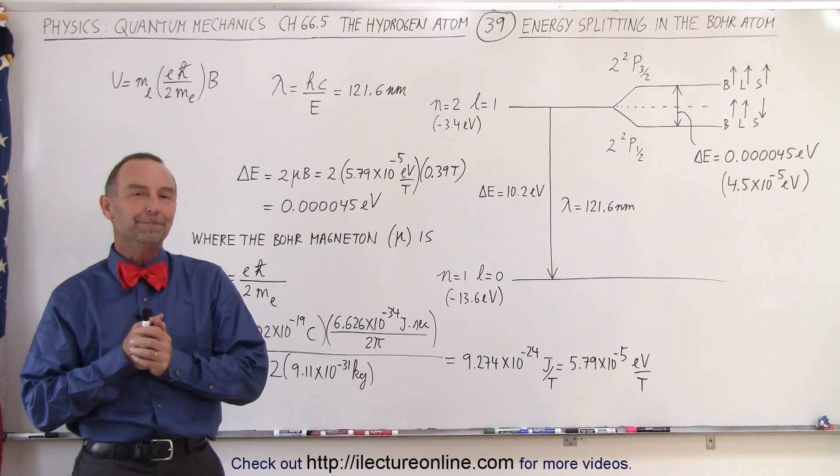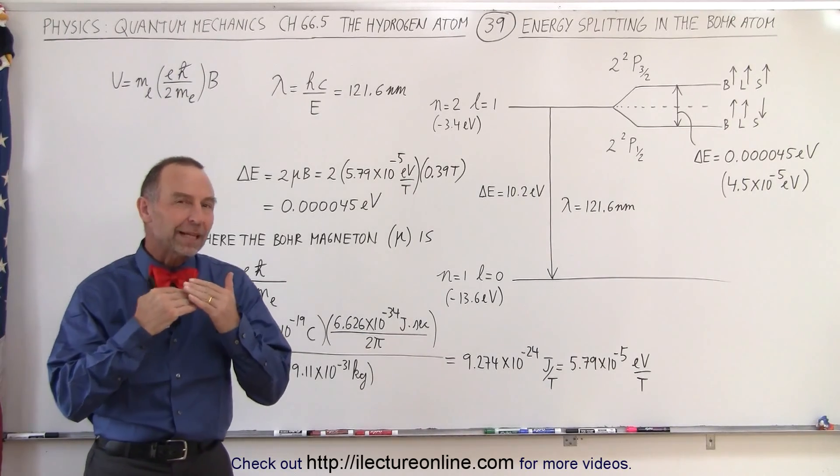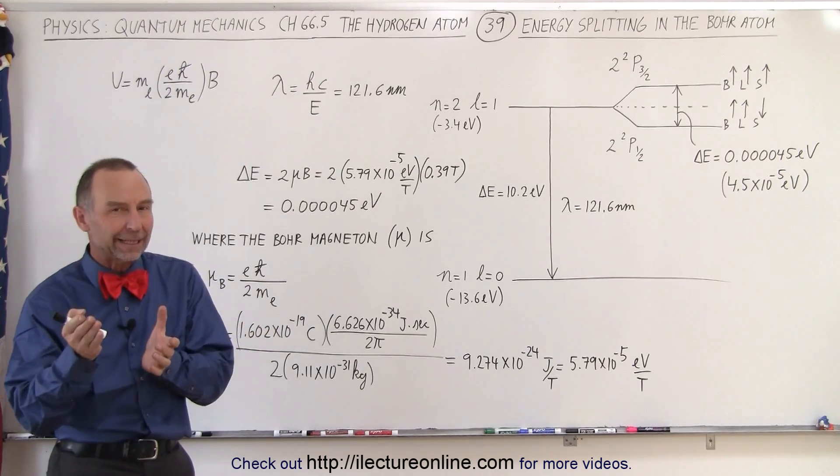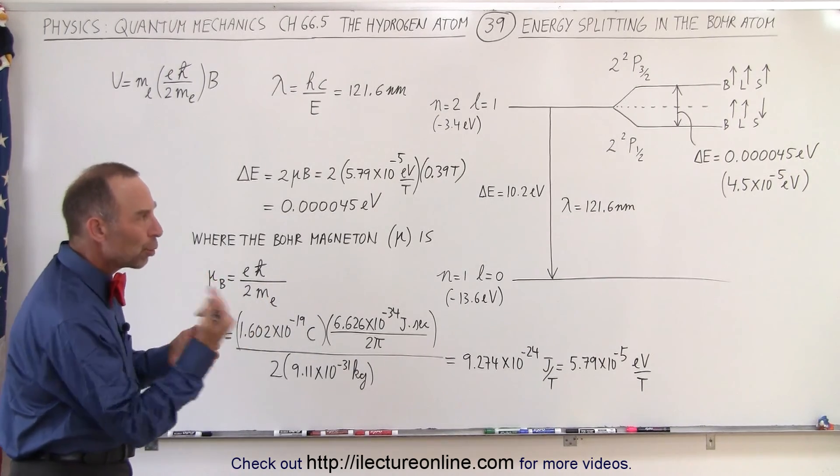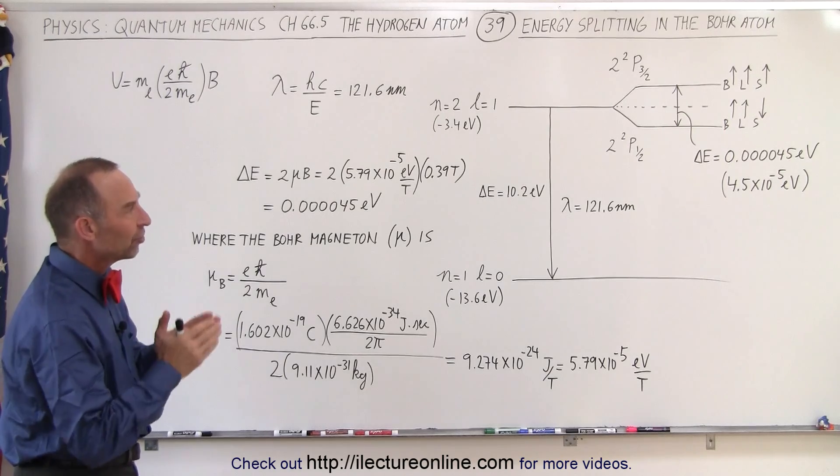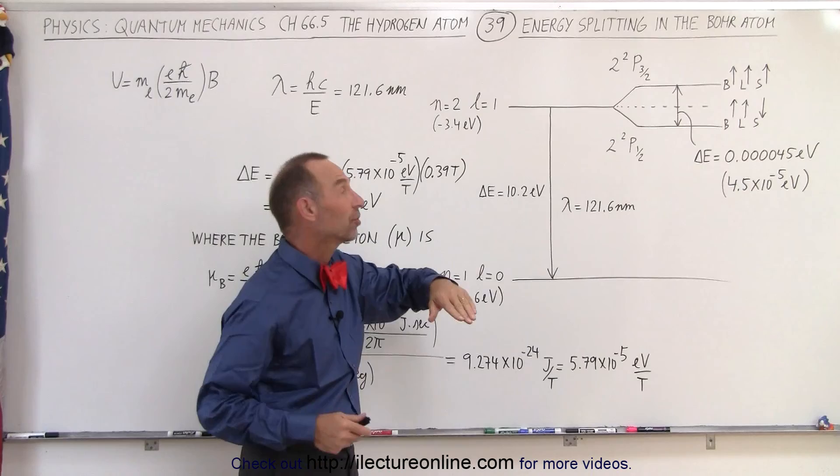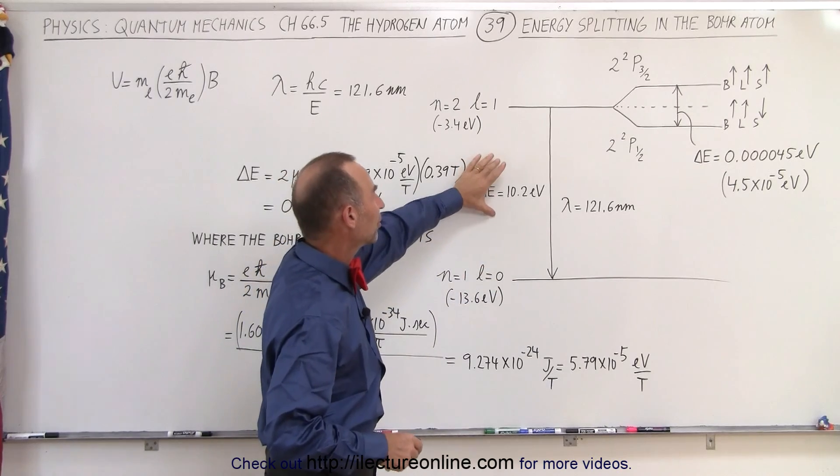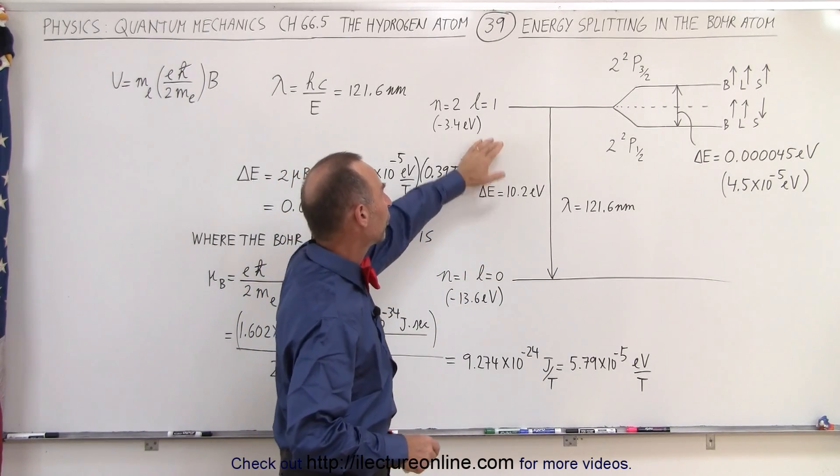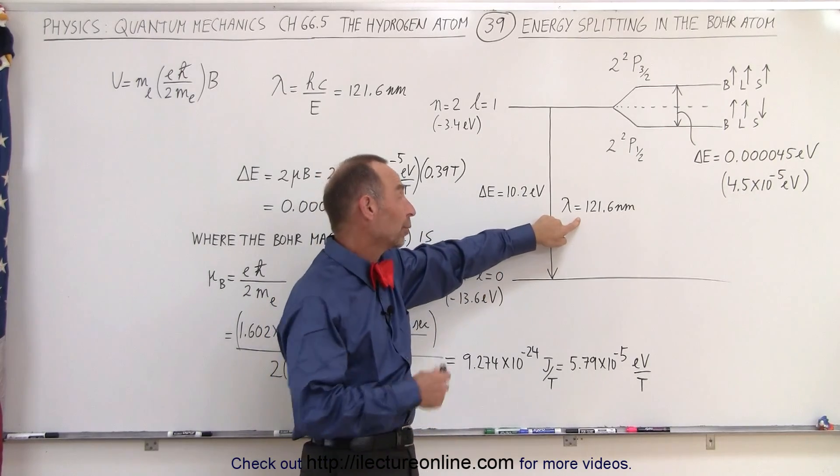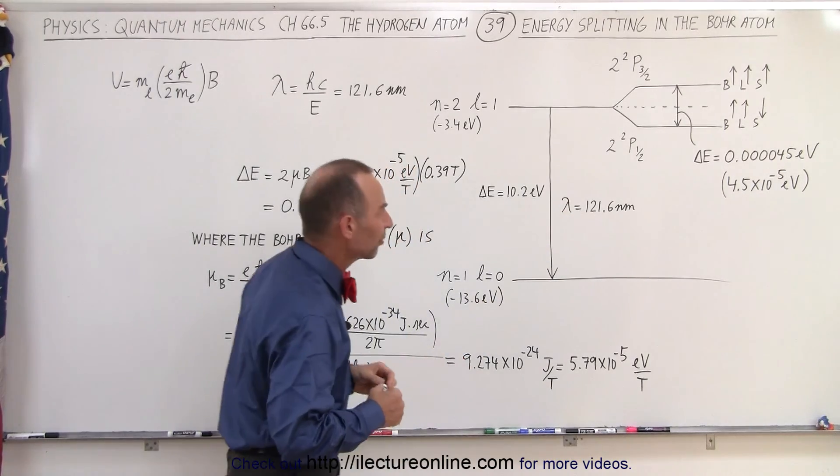Welcome to Electron Line. That slight splitting of the energies caused by the interaction between the electron spin and the orbital motion of the electron was first seen in the jump from the second level down to the first level in the Lyman series, where we have an energy difference of about 10.2 electron volts when we jump between these two levels, giving off a photon with a wavelength of about 121.6 nanometers.